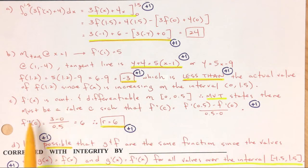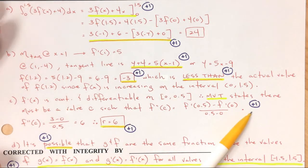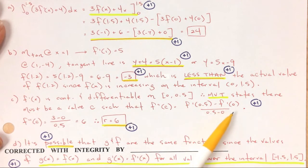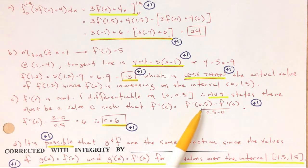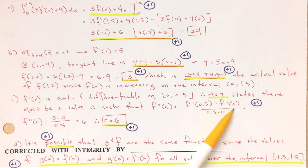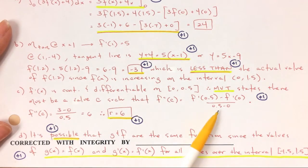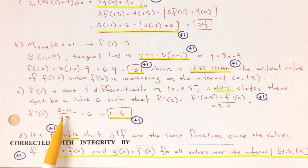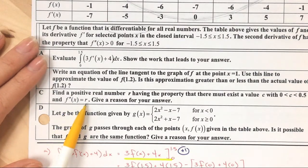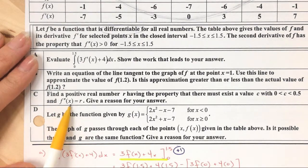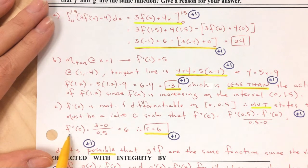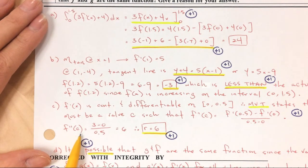The Mean Value Theorem states there must be a value c such that f double prime of c equals f prime of 0.5 minus f prime of 0, over 0.5 minus 0. Just stating the MVT earns a point. Now finding the values: f prime of 0.5 is 3, and f prime of 0 is 0. So that's 3 minus 0 over 0.5 minus 0, which equals 3 divided by 0.5, which is 6. Therefore r equals 6.